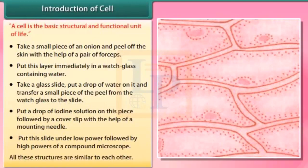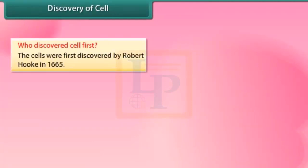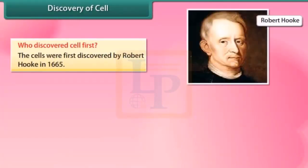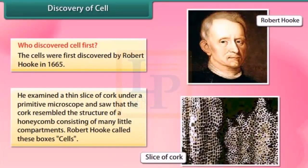All these structures are similar to each other. Discovery of cell — who discovered the cell first? The cells were first discovered by Robert Hooke in 1665. He examined a thin slice of cork under a primitive microscope and saw that the cork resembled the structure of a honeycomb, consisting of many little compartments. Robert Hooke called these boxes cells.